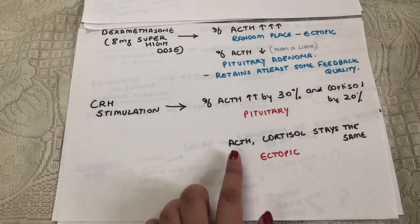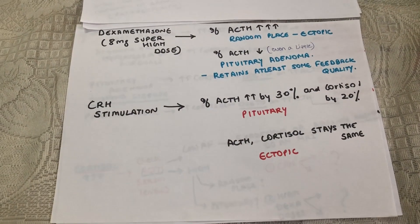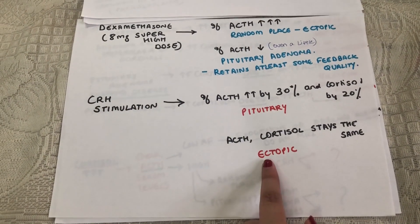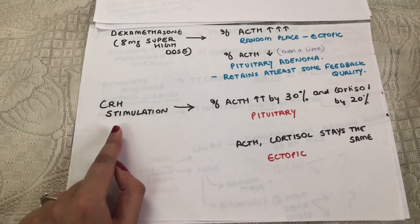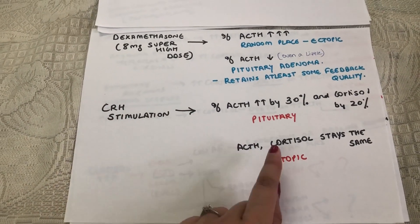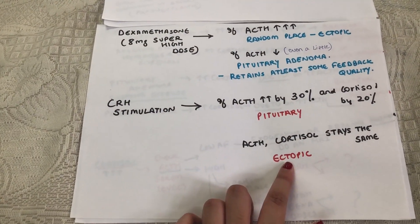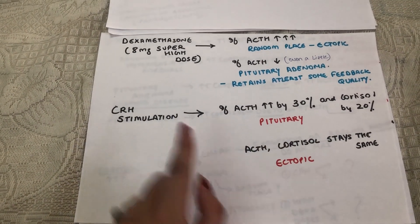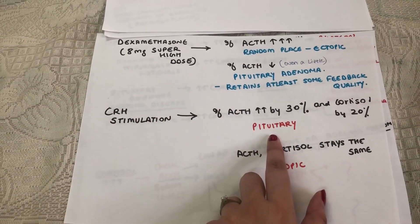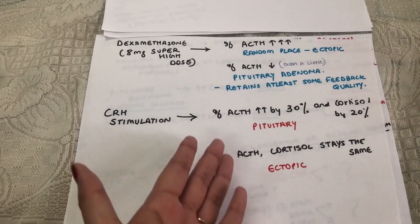If the increased ACTH levels are being produced by the ectopic source like the lung or bronchioles, then the CRH stimulation will not really increase the ACTH too much because this ACTH from this ectopic source is already suppressing the pituitary ACTH. So when the CRH tries to stimulate the pituitary ACTH, the increase is not too much because it's being suppressed.